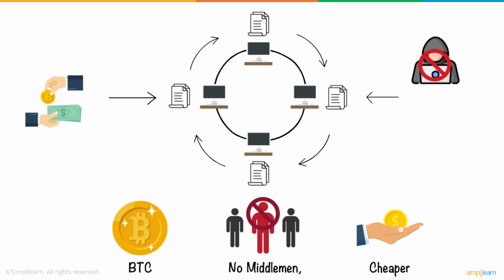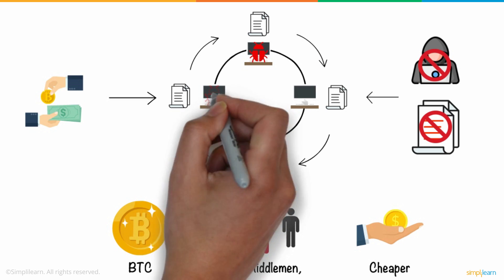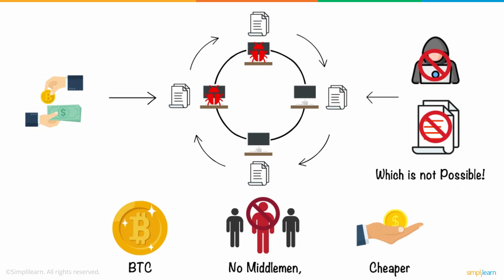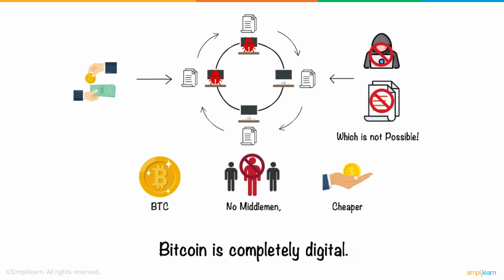Making it impossible to hack or manipulate. Because to do so, you will have to take down or hack every system or node participating in the network. Bitcoin is completely digital.